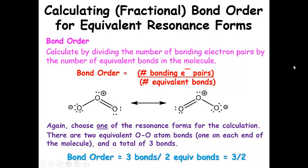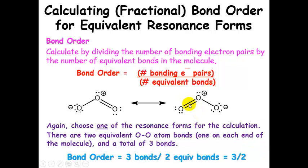What about bond order? The bond order is one-and-a-half. We use a similar procedure as partial formal charge, but this time we take the number of bonding pairs. Count up each individual bond using one resonance form: one, two, three — three bonding electron pairs, divided by two equivalent bonds involved in resonance. That gives us a bond order of three-halves, or one-and-a-half. It's important to choose one resonance form for the calculation, and make sure to count each individual bond in the double bond — so one, two, three: three bonding electron pairs.